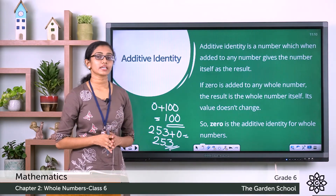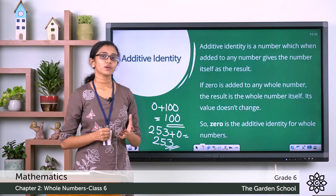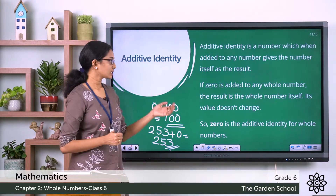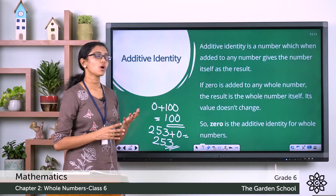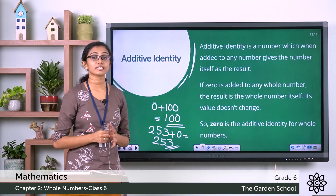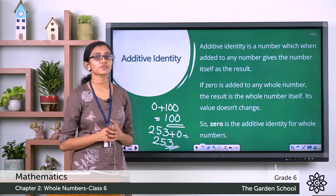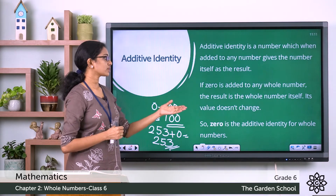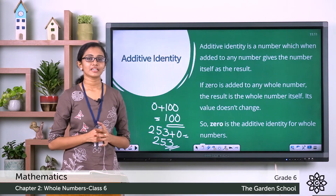So you can say 0 is the additive identity, or the identity element for addition in the case of whole numbers. If 0 is added to any whole number, the result is the whole number itself — its value does not change, its identity remains the same. So 0 is the additive identity for whole numbers.